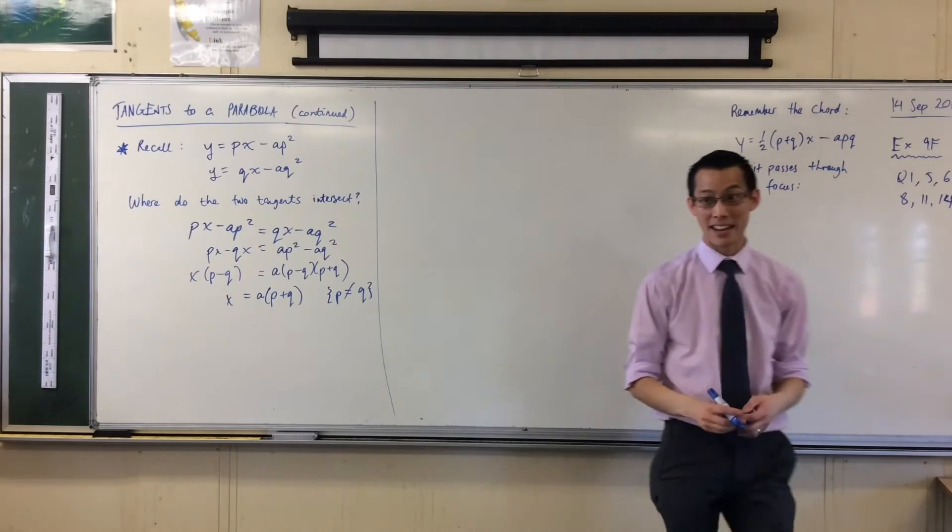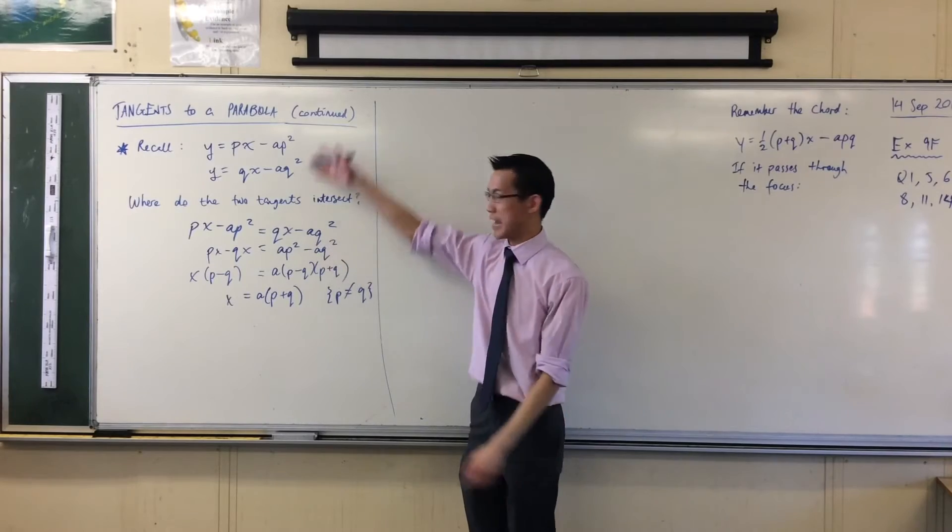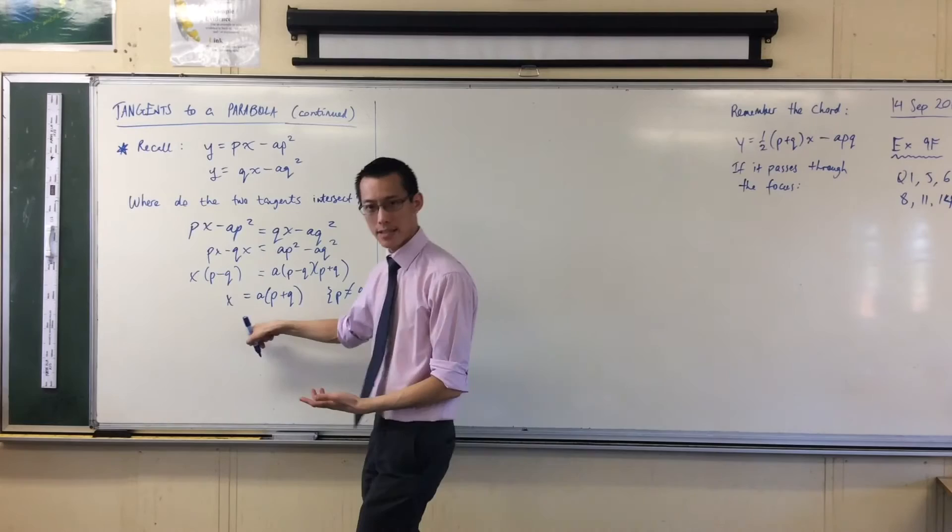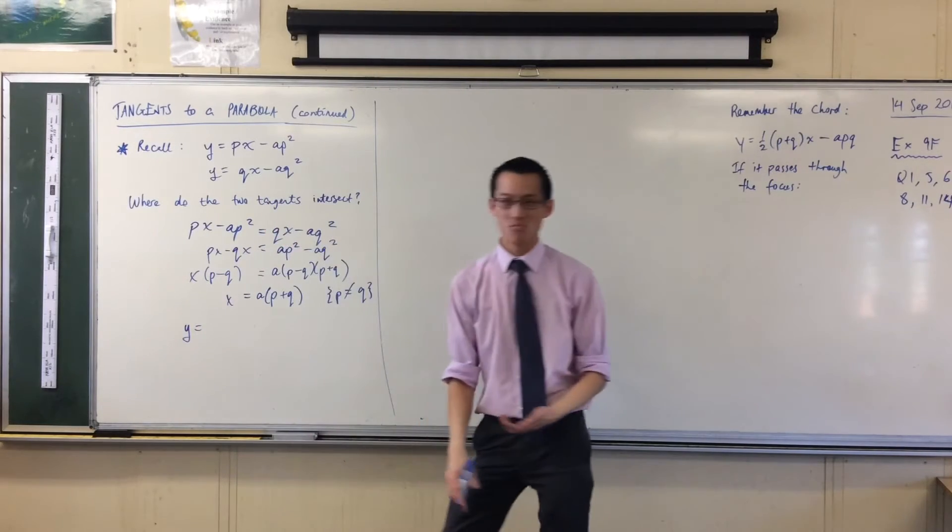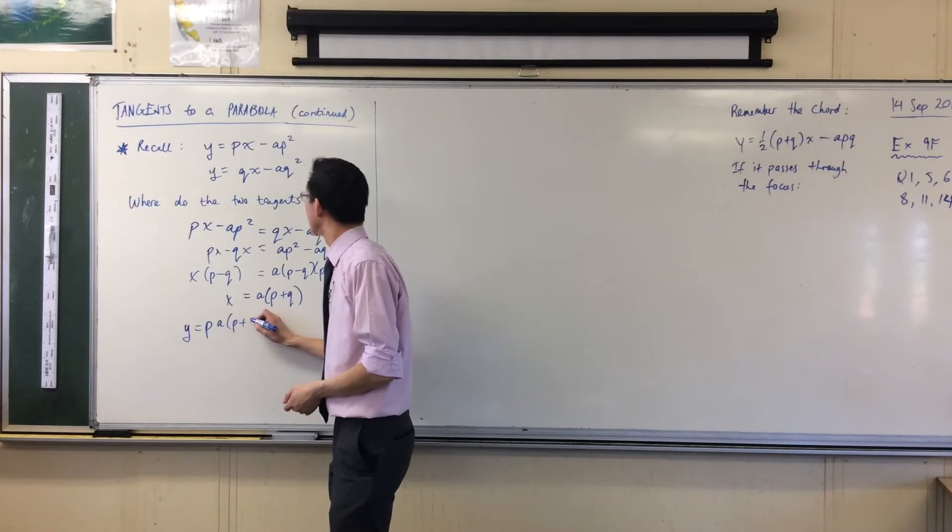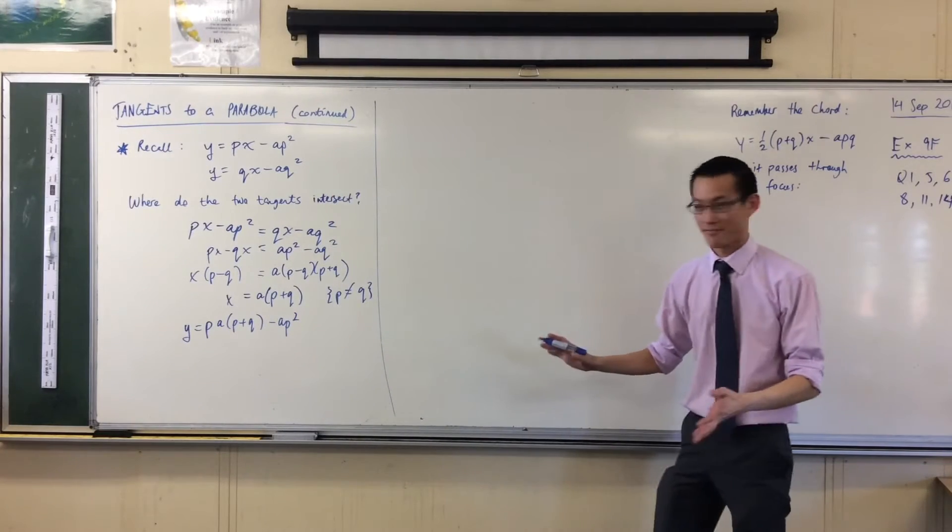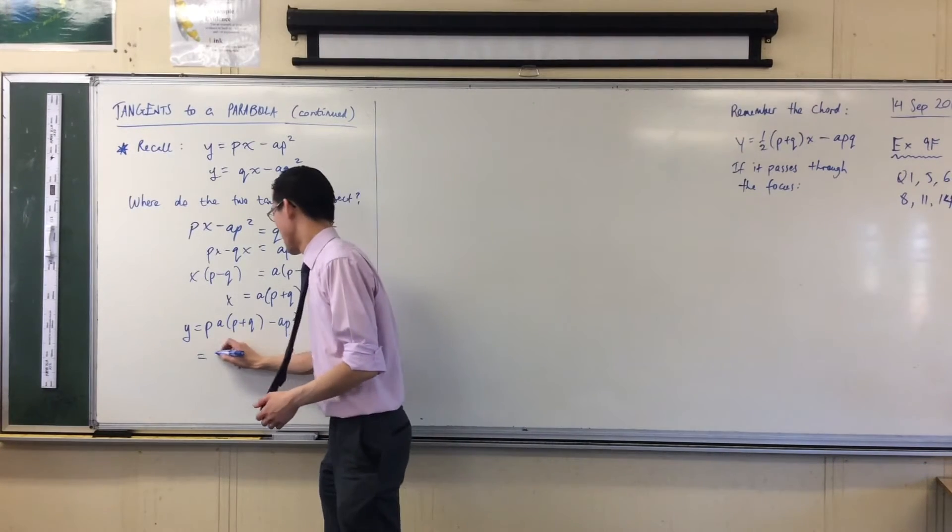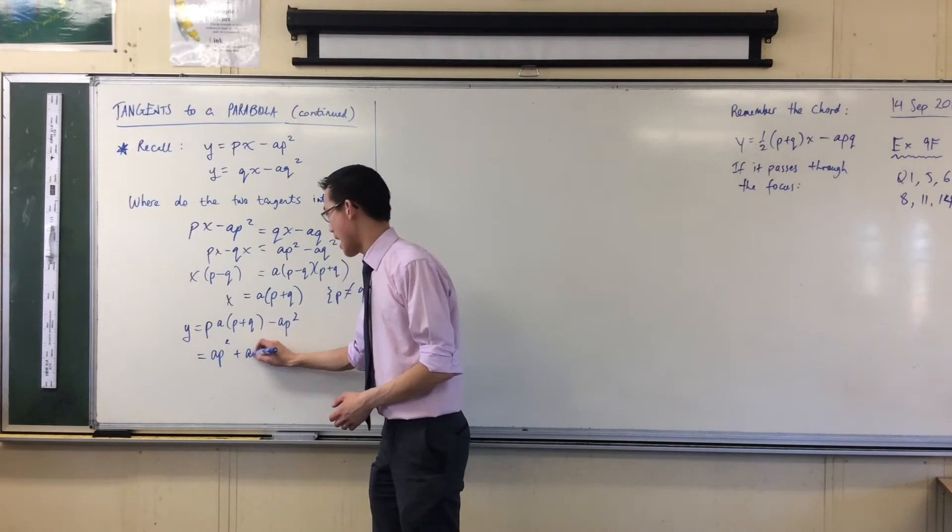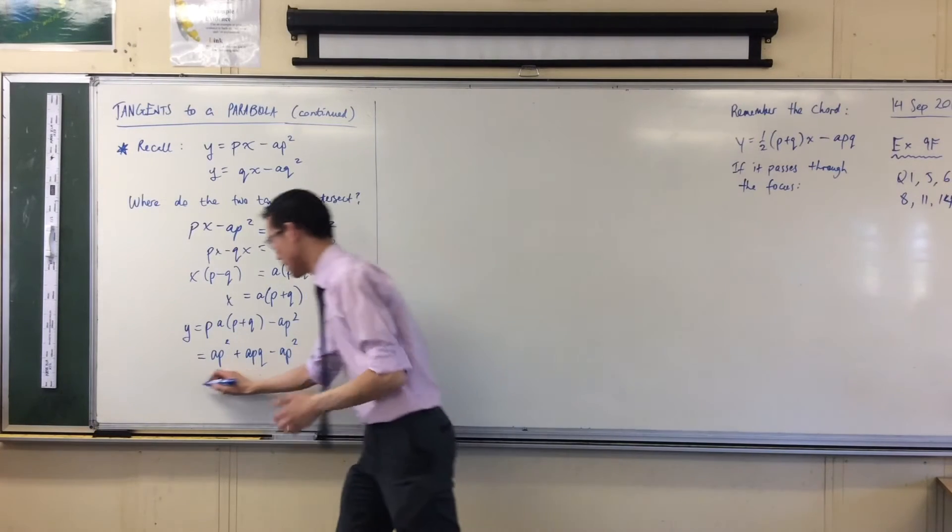That's nice and neat, isn't it? Once you take this, you can pop this into any of these equations, and you're going to get a Y value out of it. So if this is X, if I say Y equals, pop it in the top one. There's an AP squared, hanging out the front there, plus an APQ, and then that AP squared and that AP squared cancel out, leaving you with this.